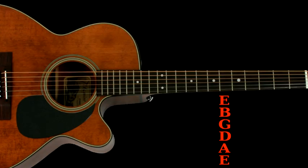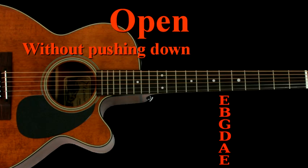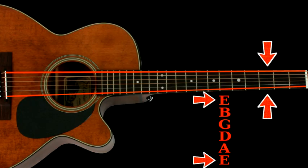These strings are named after the note that string produces when it is played open. Open means without pushing down on any frets. You may have noticed there are two strings both named E. Both of these strings do produce an E pitch, but they are two octaves apart.